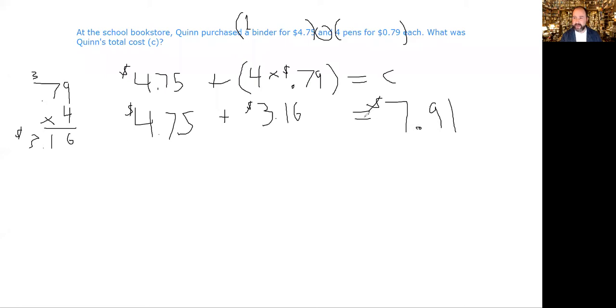I think it might have just been a math error, but it also might have been that we're not thinking about the parentheticals. Remember you can't go across these parentheticals, you can't do like 4 times 475. You got to do what's in parentheses first before you can add it to the 475.